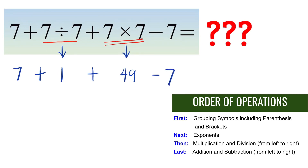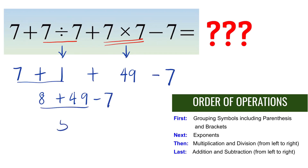Since the new expression only involves addition and subtraction, all we need to do is simplify from left to right. 7 plus 1 is 8, then we add 49 to get 57, and then subtract 7. So, the final answer is 50.